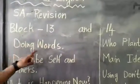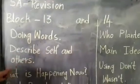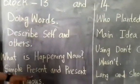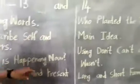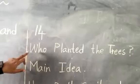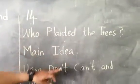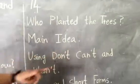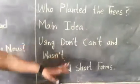Okay children, the topics for Block 13 are: doing words, describe self and others, what is happening now, simple present and present continuous. Block 14 topics are: who planted the trees, main idea, using don't, can't and wasn't, and long and short thoughts.